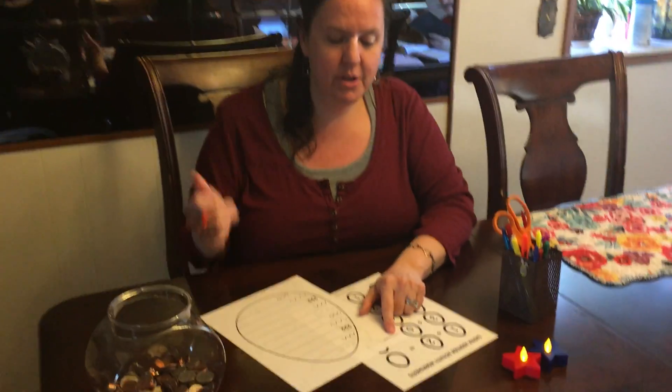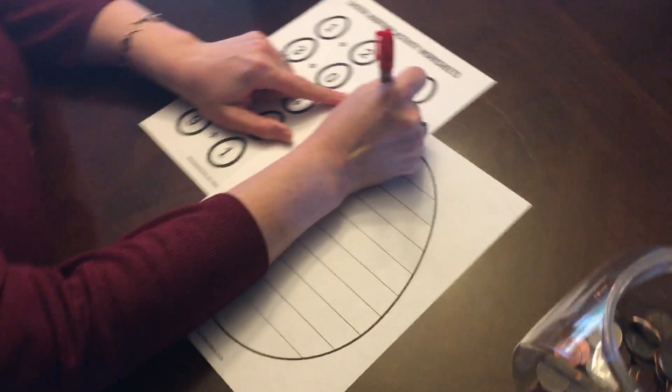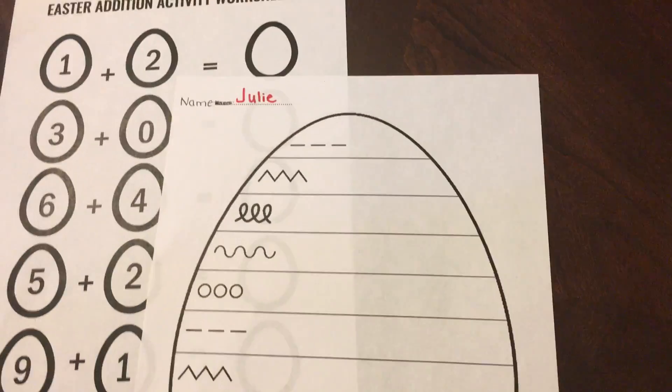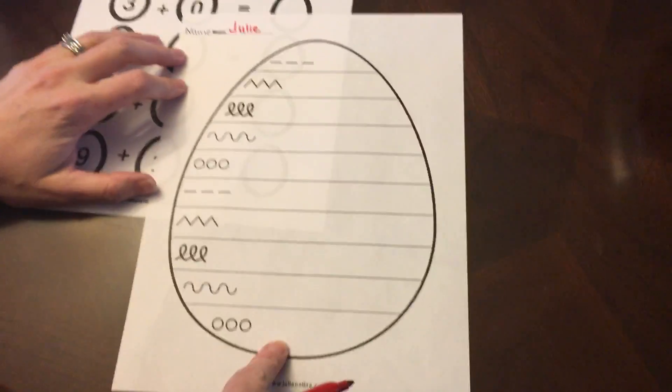For the first one, up here is your name and there's just a little line, so I'm going to write my first name. Then it is finishing the pattern on the egg, so let's start from the top and work our way down.